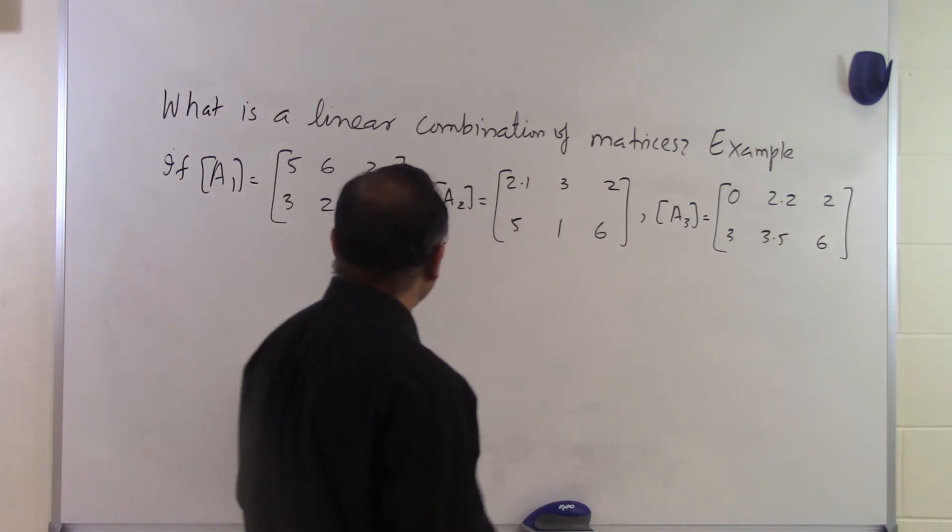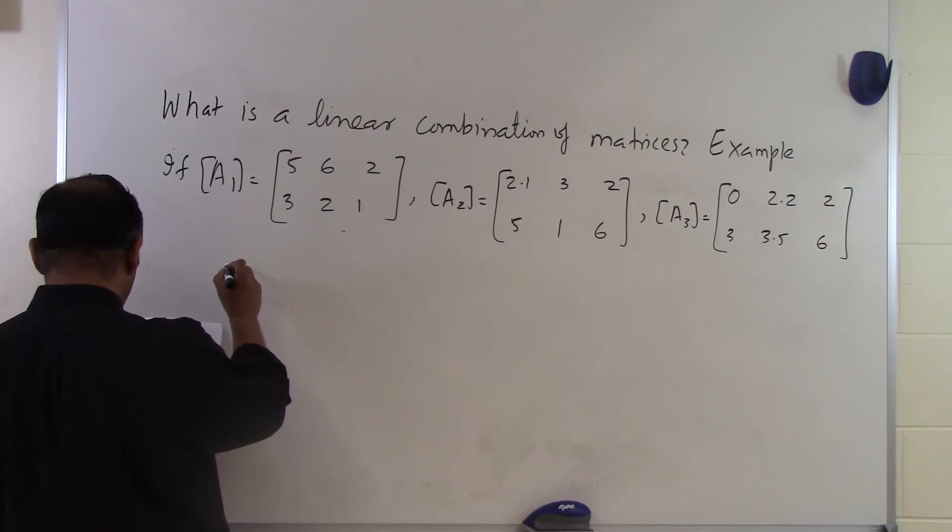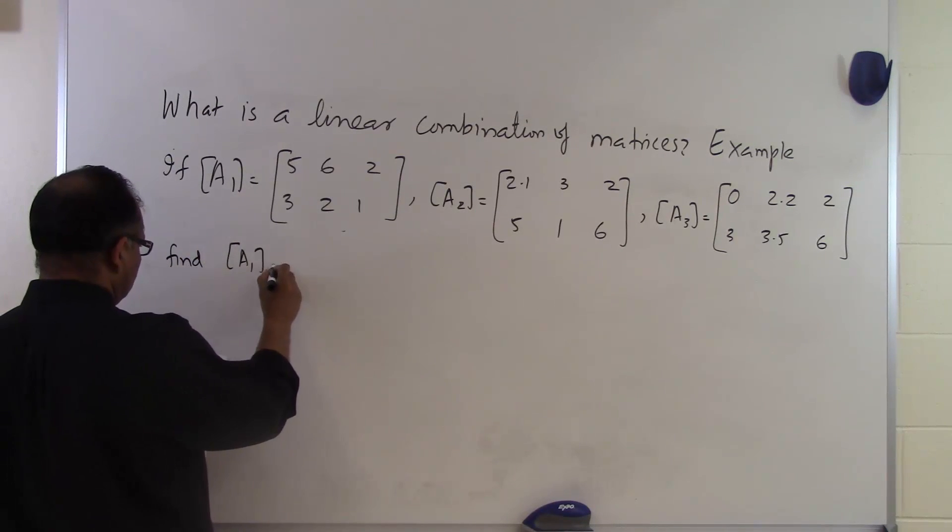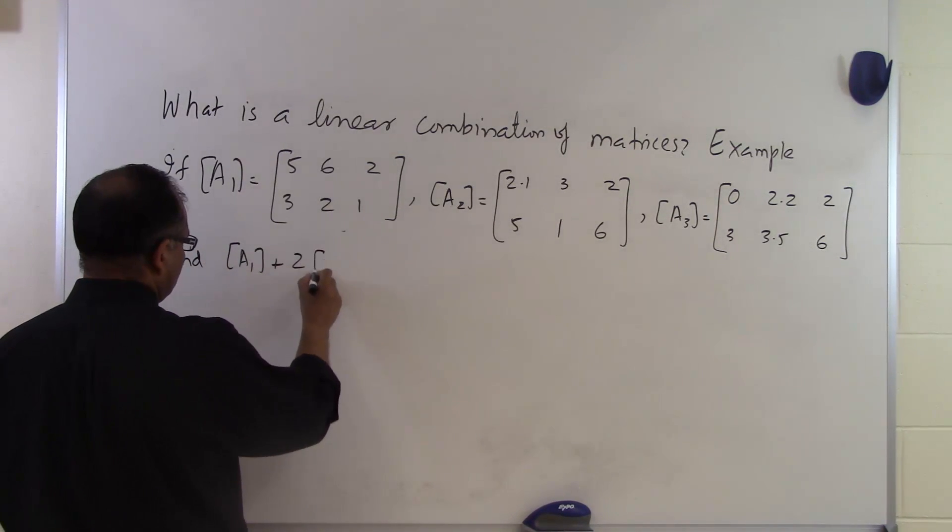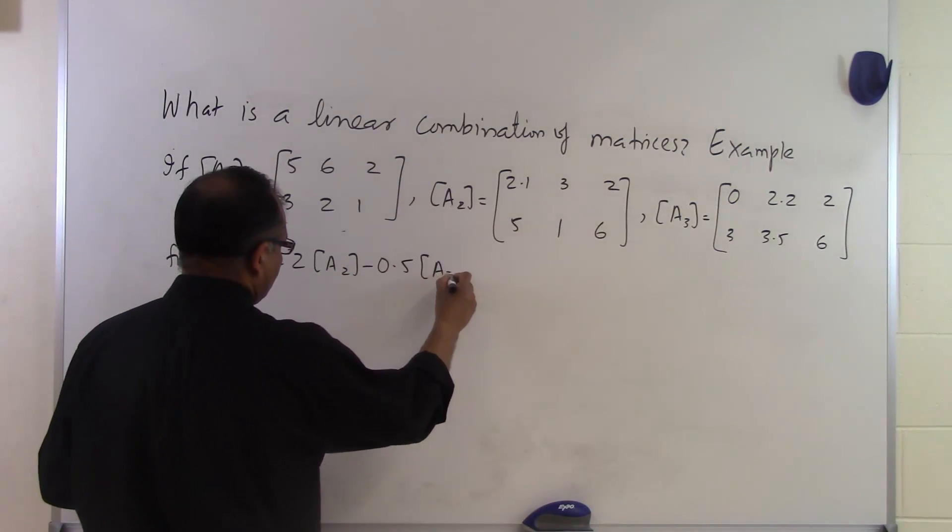So let's suppose somebody gives you these three matrices and says, go ahead and find this particular linear combination of these matrices. Find A1 plus 2A2 minus 0.5A3.